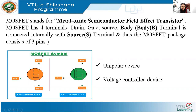Here we can see the symbolic representation of MOSFET devices. The orange diagram shows the symbol for the N-channel MOSFET, and the green diagram shows the symbol for the P-channel MOSFET.